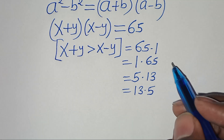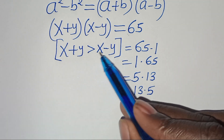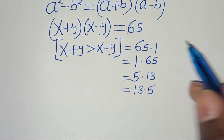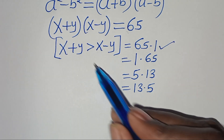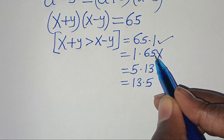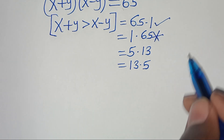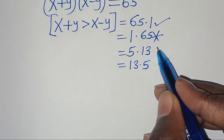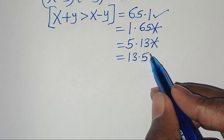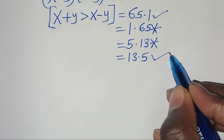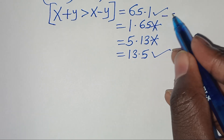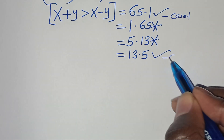Since x plus y is greater than x minus y, the pair 65 and 1 satisfies the condition, as 65 is greater than 1. The pair 1 and 65 is rejected since 1 is less than 65. The pair 5 and 13 is also rejected since 5 is less than 13. But 13 and 5 satisfies the condition since 13 is greater than 5. So we have two valid cases.